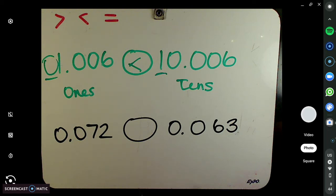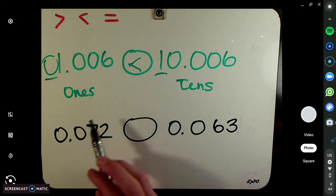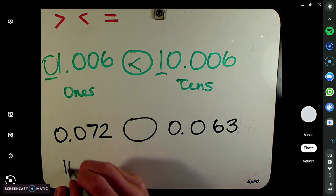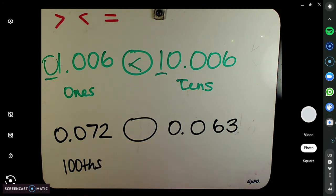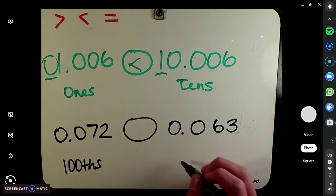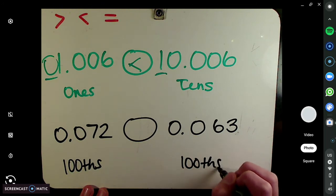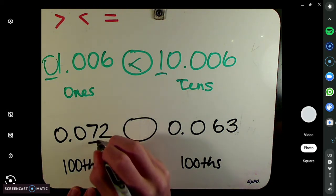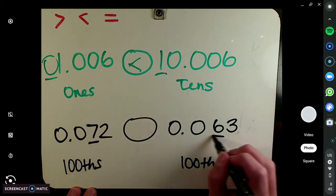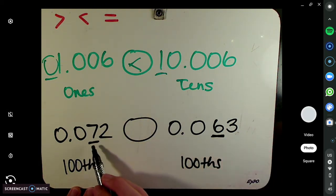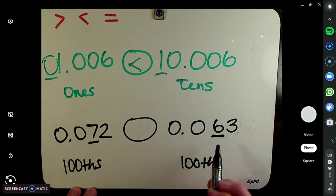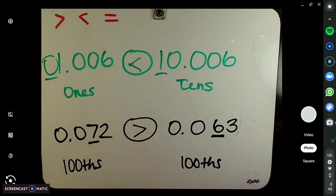We're looking for our largest place value here — no ones, no tenths. Our largest place value is hundredths. Over here — no ones, no tenths. Largest place value is, again, hundredths. So then we look at the hundredths: we have seven hundredths and six hundredths. Since this one has the larger one — seven versus six — this one is bigger.